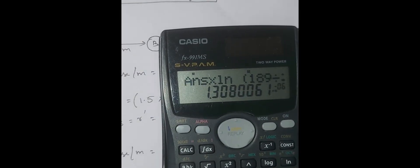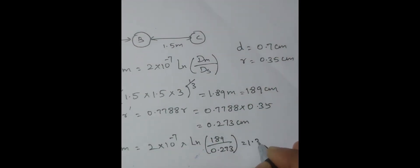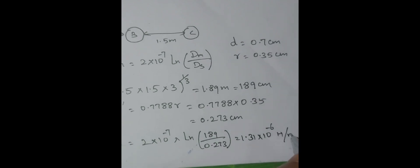Answer is 1.308. Can we round off this as 1.31 into 10 power minus 6. So 1.31 into 10 power minus 6 Henry per meter.